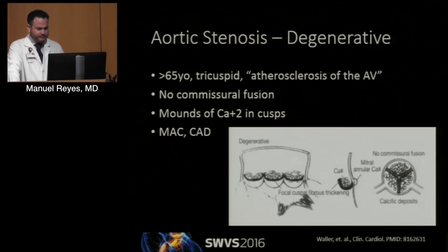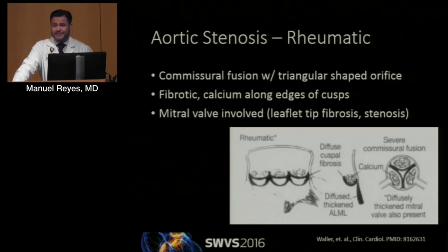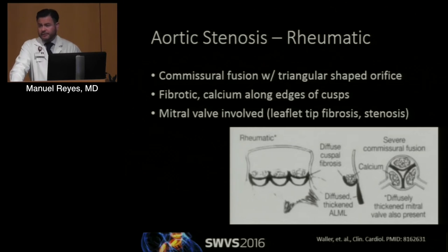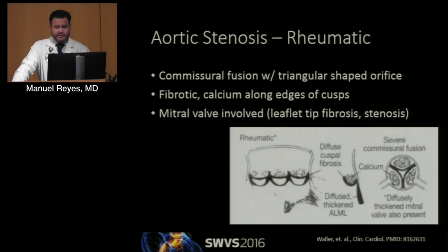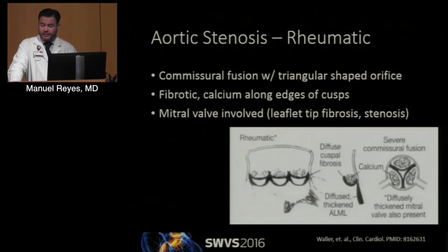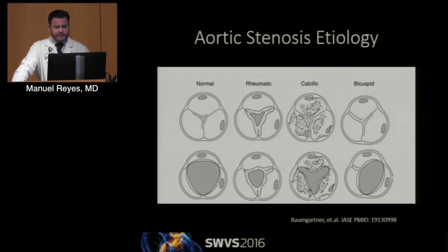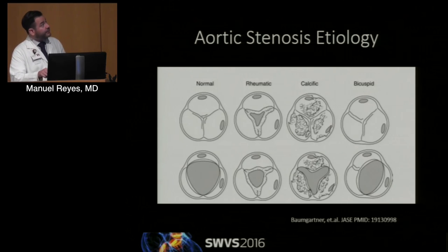It's associated with calcium everywhere else — mitral annular calcification, coronary disease, and the continuity of the aortic-mitral curtain is sometimes very calcified as well. Rheumatic disease still exists in the United States and obviously more in some parts of the world. The key feature is commissural fusion with a triangular-shaped orifice, which we can see very clearly under echo nowadays. It's fibrotic calcium along the edges of the cusp as opposed to inside the cusps. The mitral valve is generally involved as well, with leaflet tip fibrosis and a classic hockey stick appearance under echo.